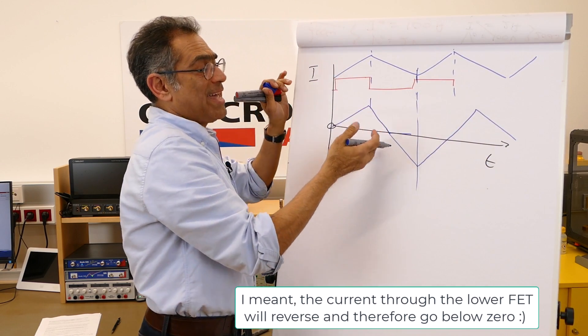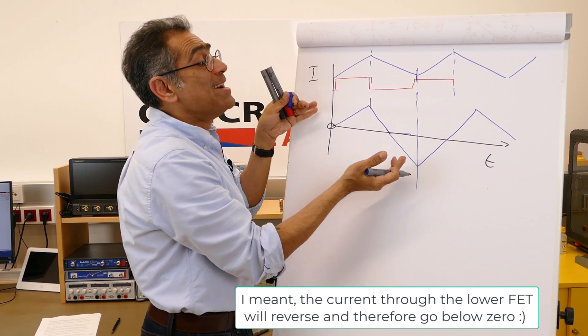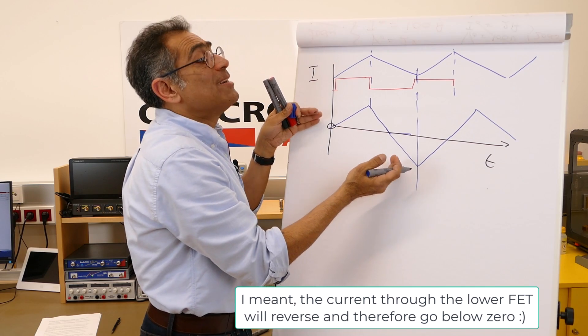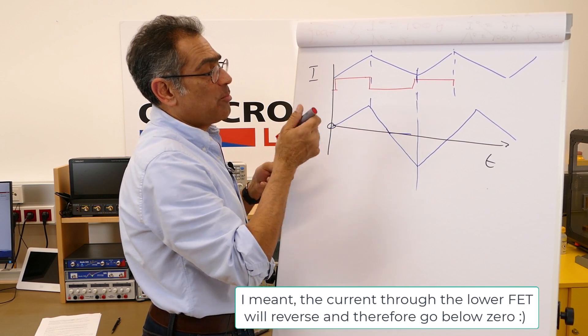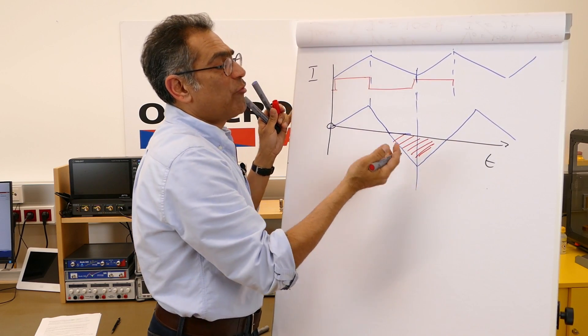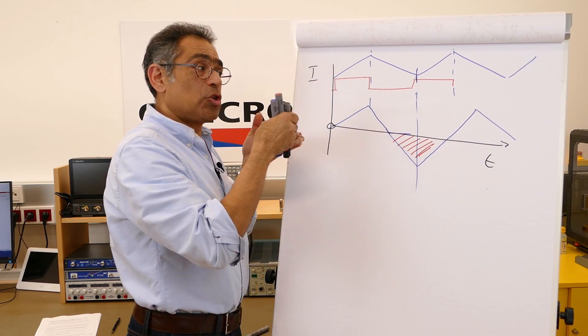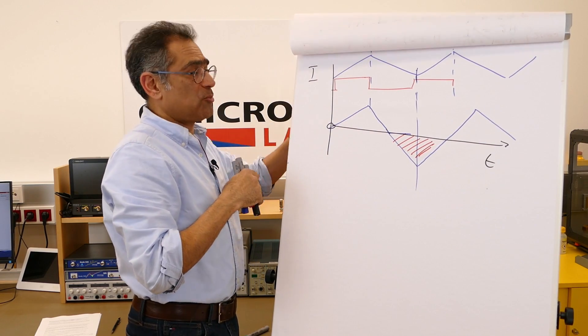So unlike normal asynchronous buck, whereby this current could not go to zero, for the synchronous switcher this can. Now consider your buck converter topology, this current is now reversing out of the capacitor in order to go somewhere. I'm going to go back to the diagram to show you what happens.